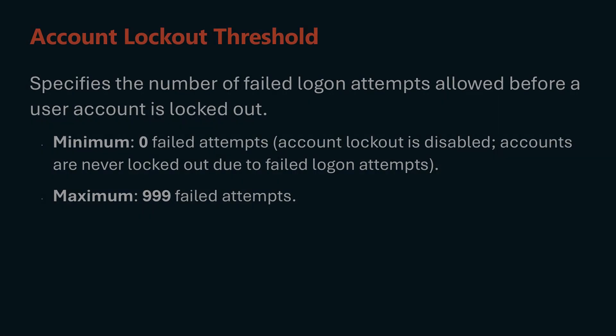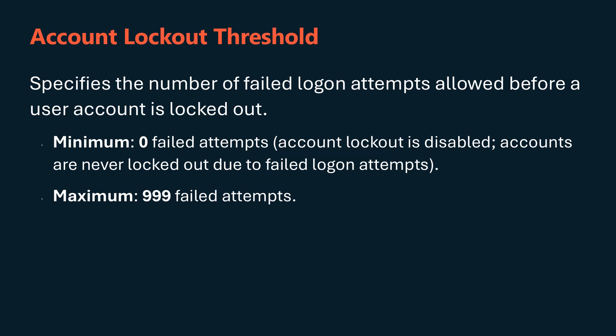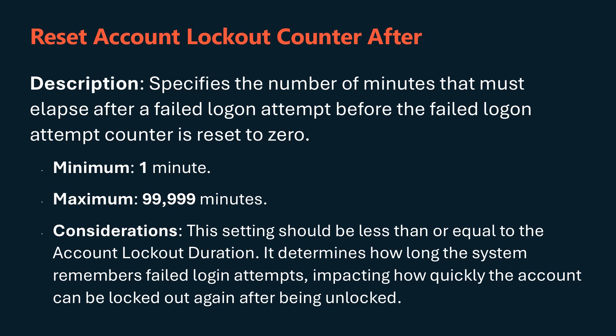The account lockout threshold policy specifies the number of failed logon attempts allowed before a user account is locked out. The default is zero, which means lockout is disabled, and you can set a maximum of 999 attempts. Setting this value too low may result in users being locked out due to typographical errors, while setting it too high may not provide adequate security against brute force attacks. It's also reliant on the reset account lockout after policy, which specifies the number of minutes that must elapse after a failed logon attempt before the failed logon attempt counter is reset to zero. The minimum is one minute and the maximum is just under 70 days, and this setting should be less than or equal to the account lockout duration.